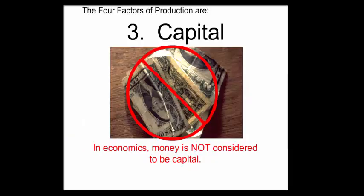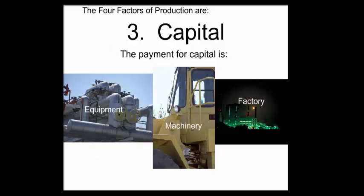Please realize, though, in economics, money is not considered to be capital. Money is what's called financial capital. But because money just sits there and doesn't produce anything, it's not considered to be capital. To be capital, it must be equipment, machinery, factory, where it produces the inputs that go into the production process.